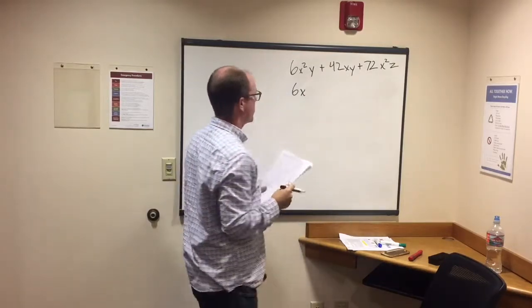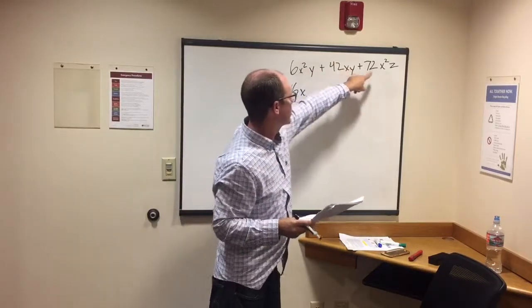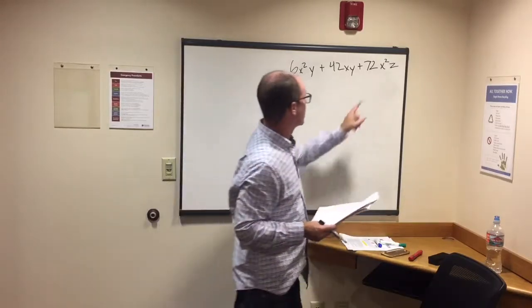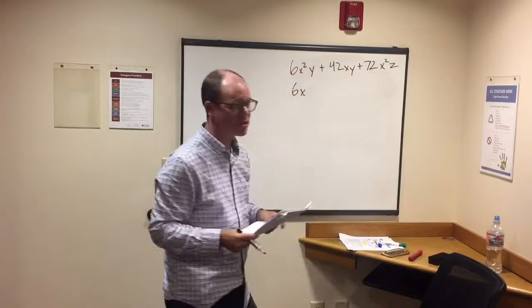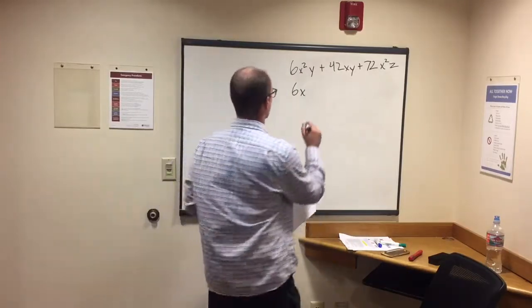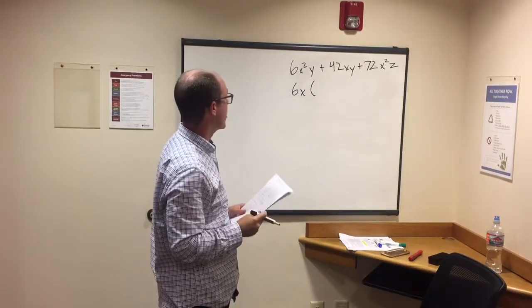What about y? I got a y here, a y here, not here - can't take y out of all three parts. There's also a z over here, but not for these two. So all I can take out is 6x to fully factor this expression. Now I'm just going to multiply the other stuff out.